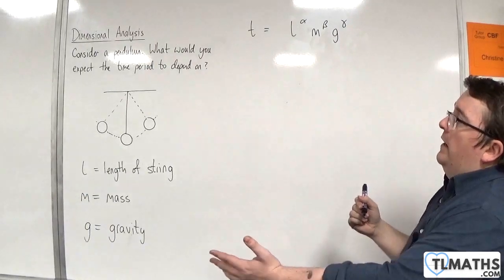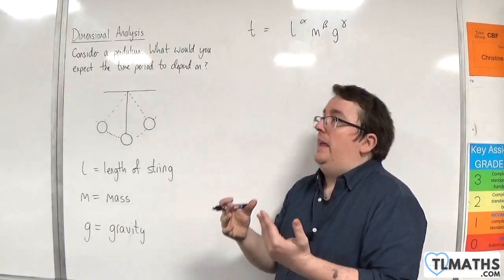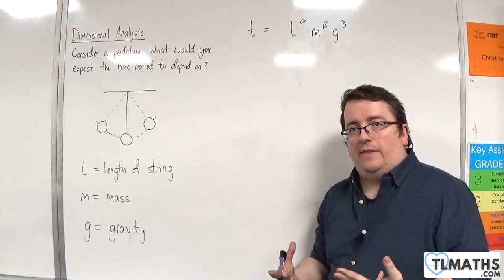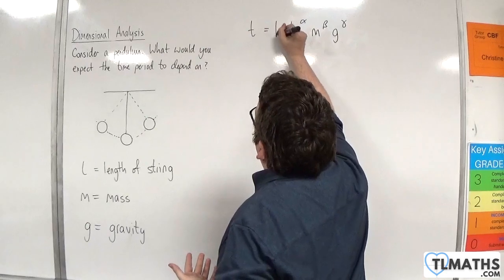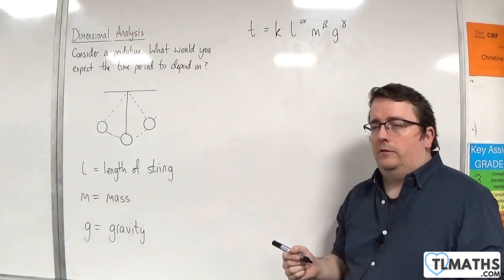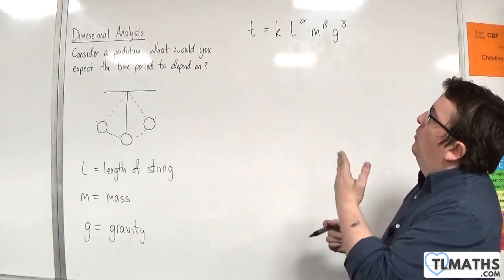Now, it's unlikely that it would just be equal to multiplying those three things together. So there's probably some dimensionless constant out the front. We'll call that K. But that's what we'll work with.